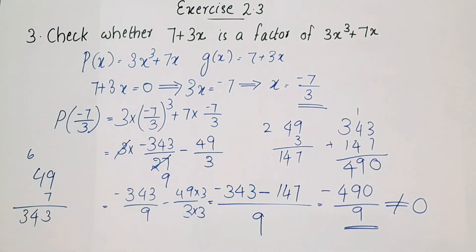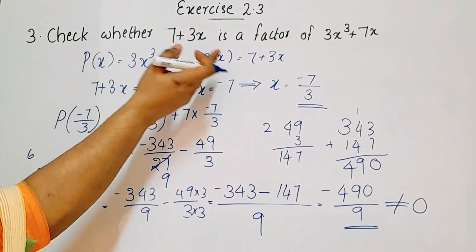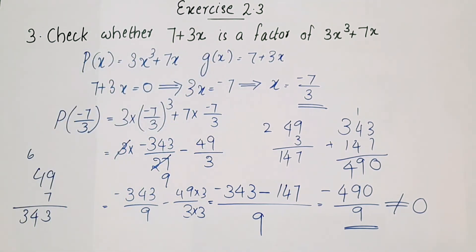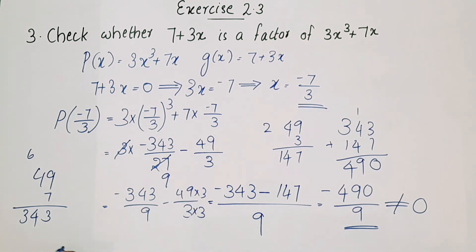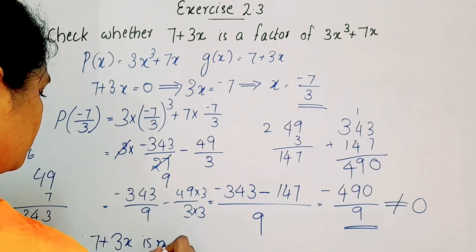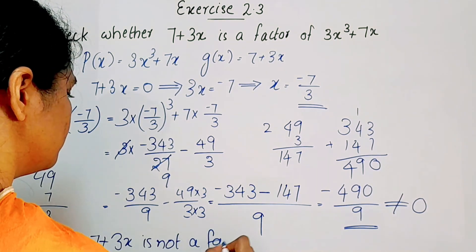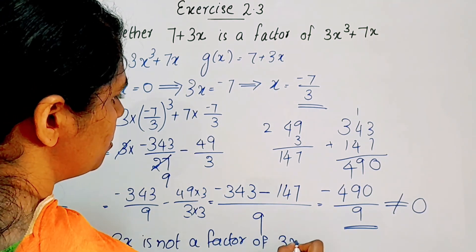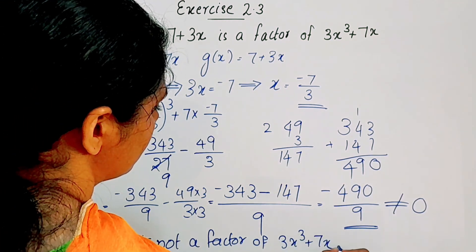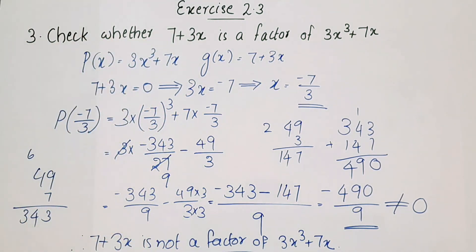Since the remainder is not equal to 0, therefore 7 plus 3x is not a factor of 3x³ plus 7x.